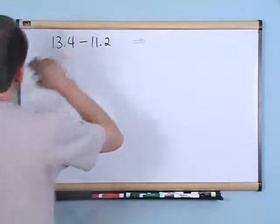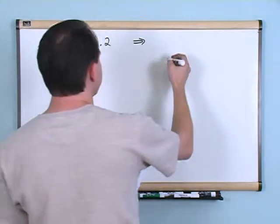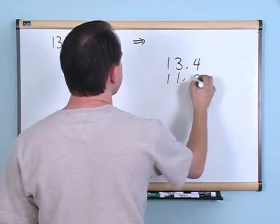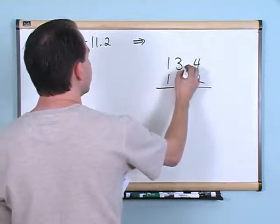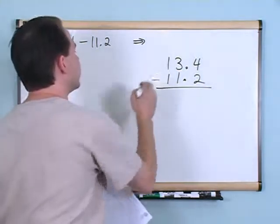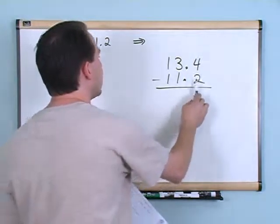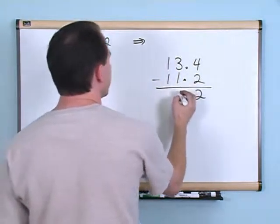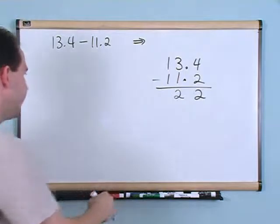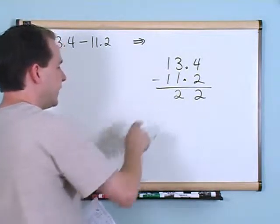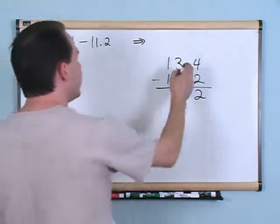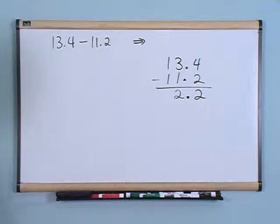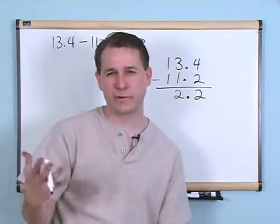I'm just going to do a couple more with addition and subtraction because it really is so similar. What if you have 13.4 minus 11.2? You're going to write the bigger number on top and the smaller number underneath it, line the decimal points up one underneath the other, and then subtract. Start in the right column — 4 minus 2 gives me 2.